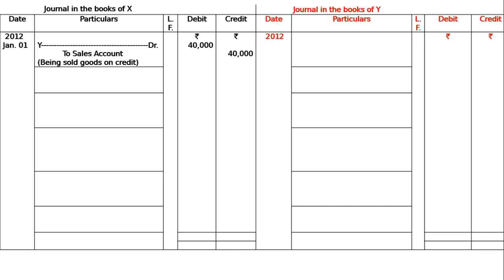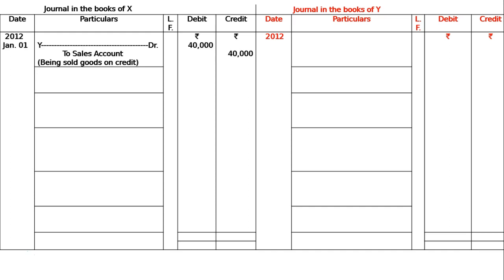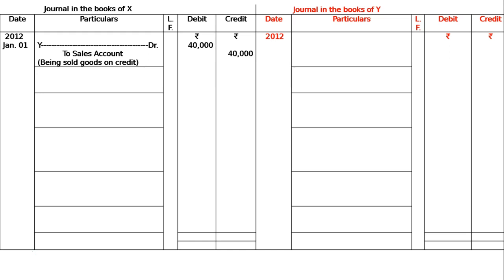The first entry in the books of X: Y debited to sales account, rupees 40,000, being goods sold on credit. Since X is selling on credit, Y is buying on credit. Hence in the books of Y, it is purchases account debited to X on the same day — purchases account debited to X, being goods purchased on credit.